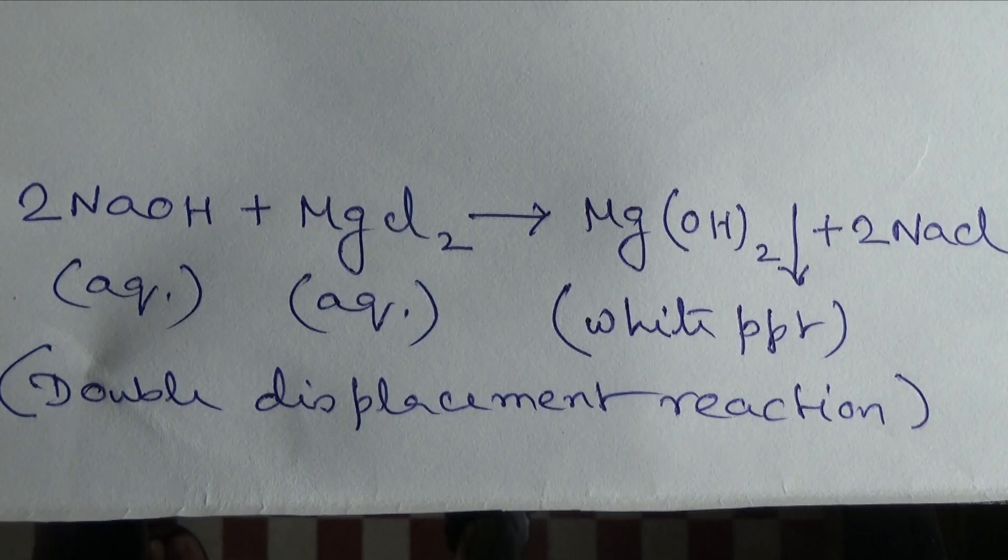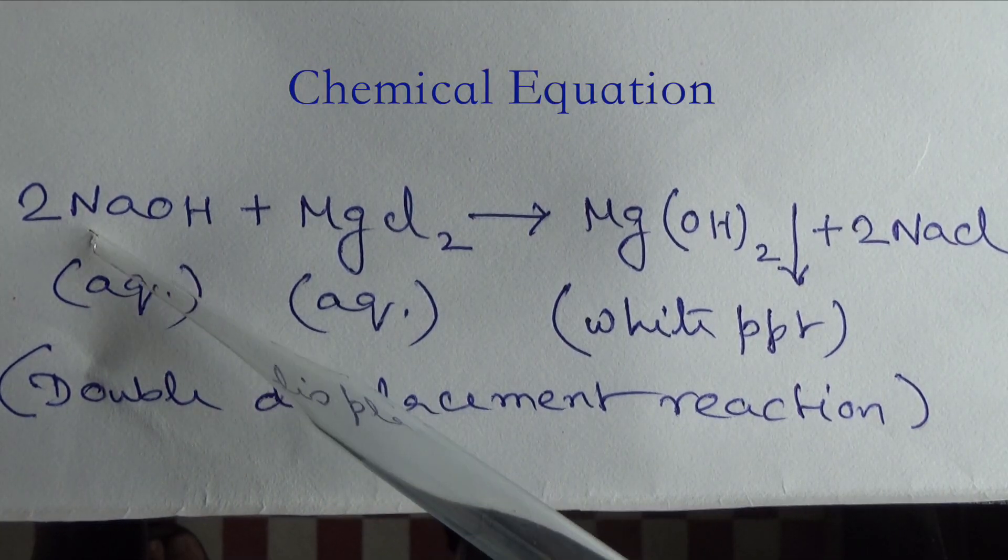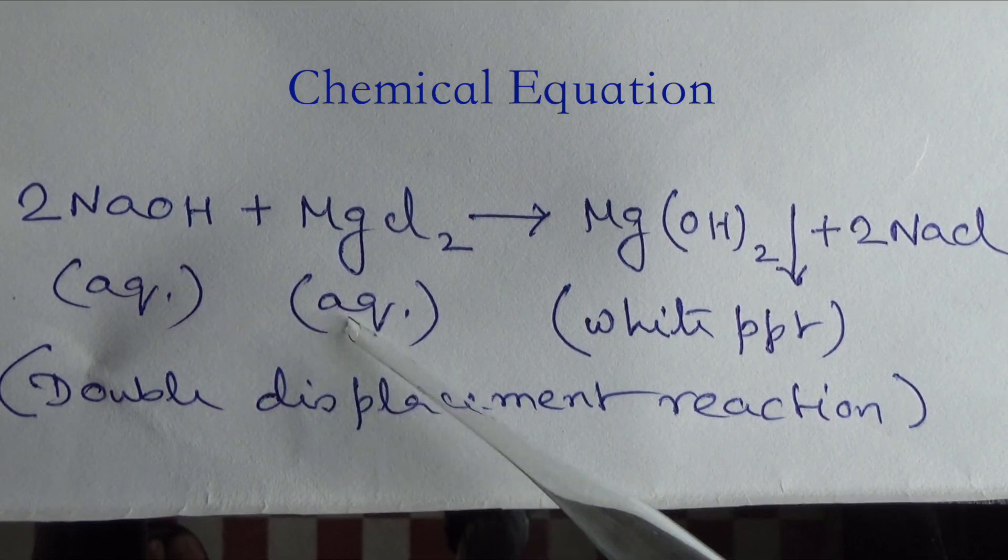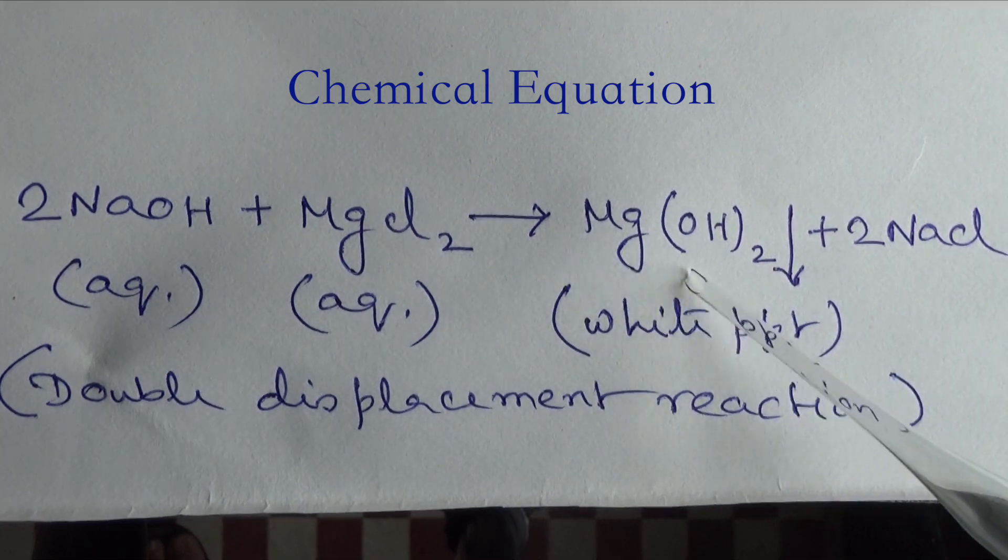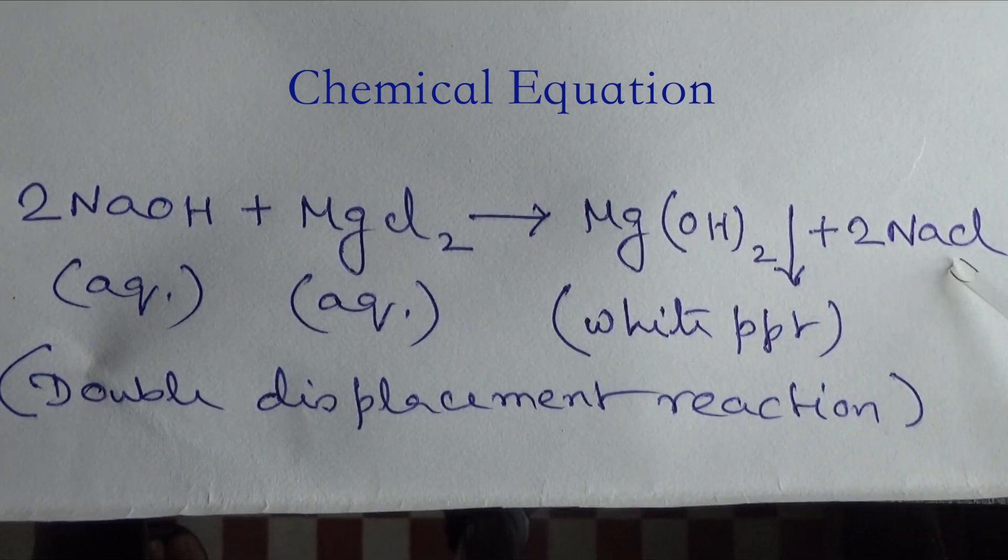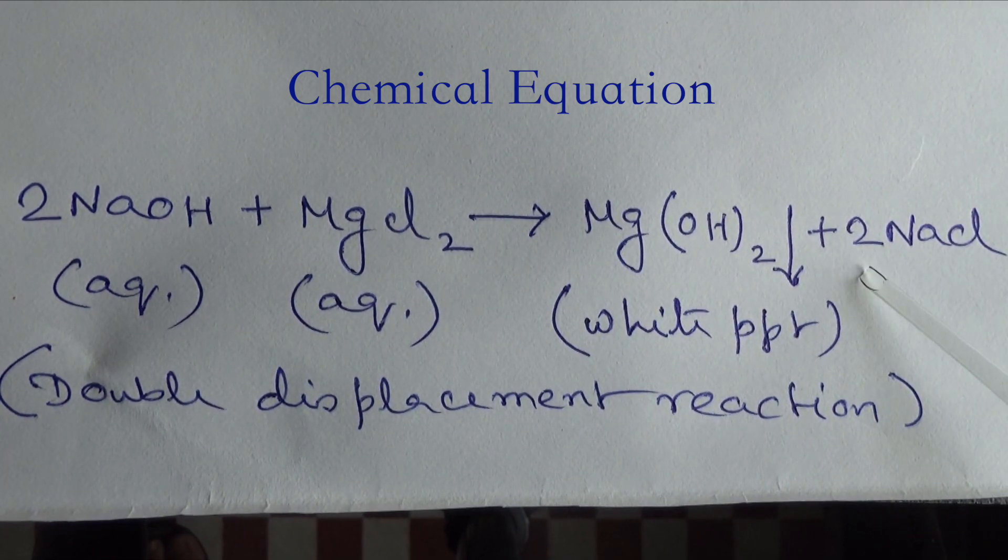In this reaction, aqueous solution of sodium hydroxide reacts with aqueous solution of magnesium chloride, producing a white precipitate of magnesium hydroxide along with sodium chloride.